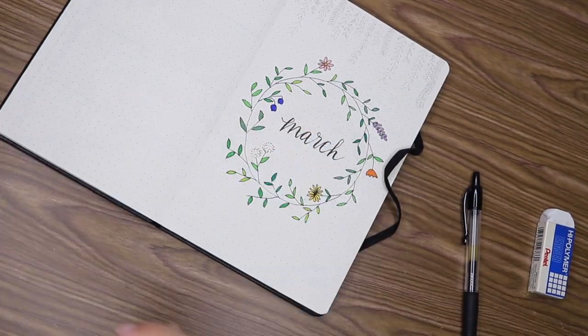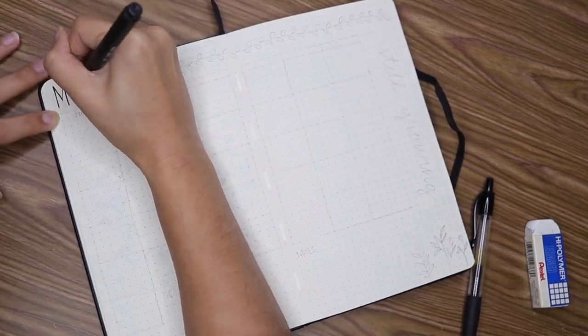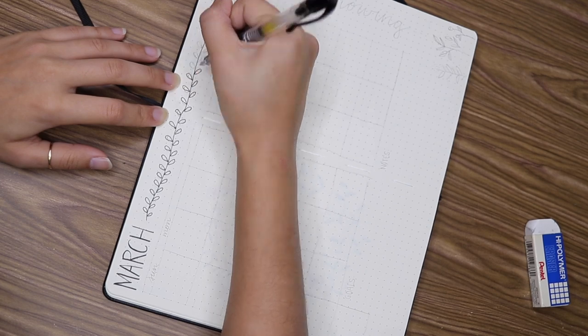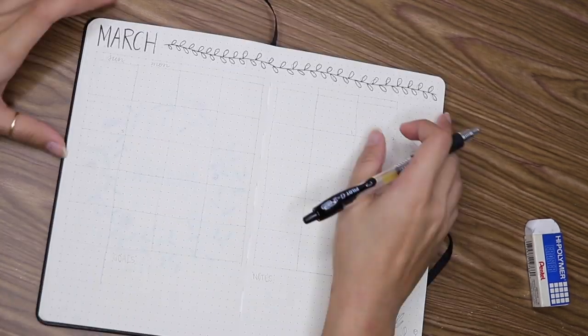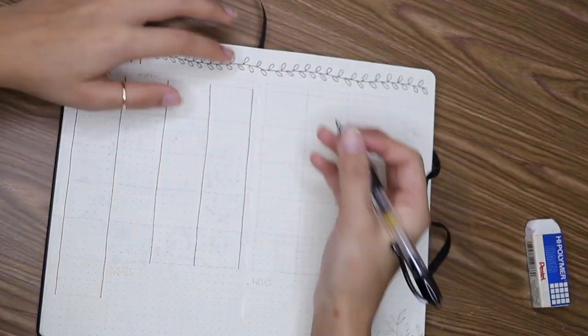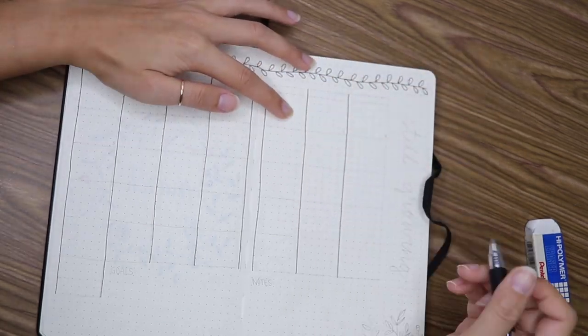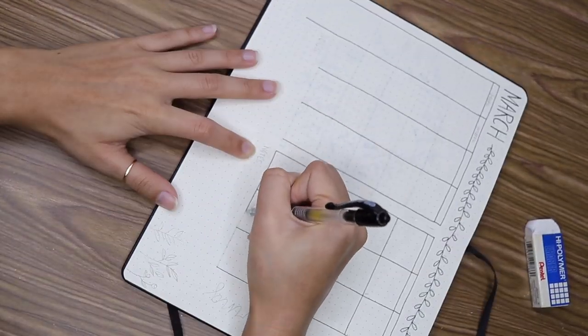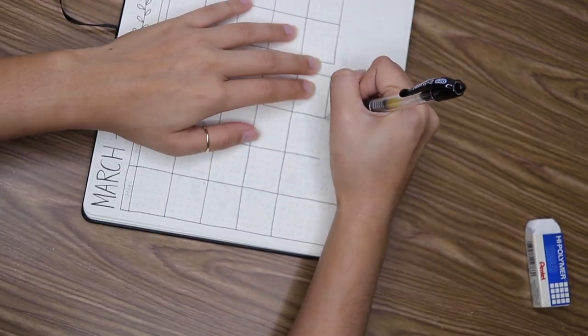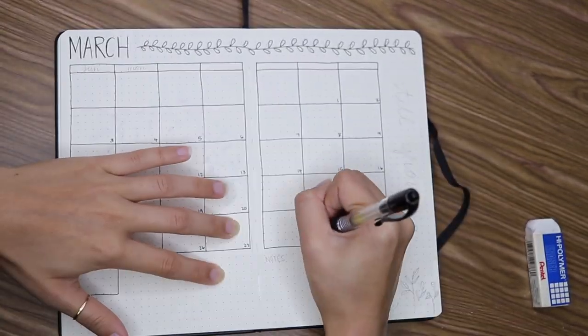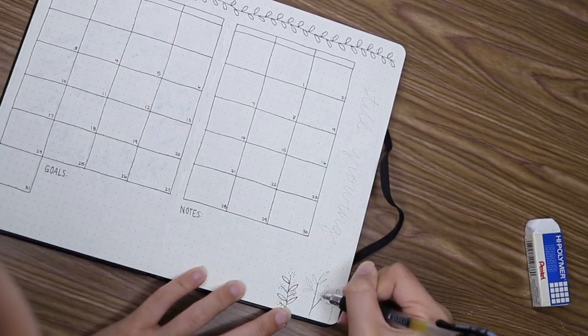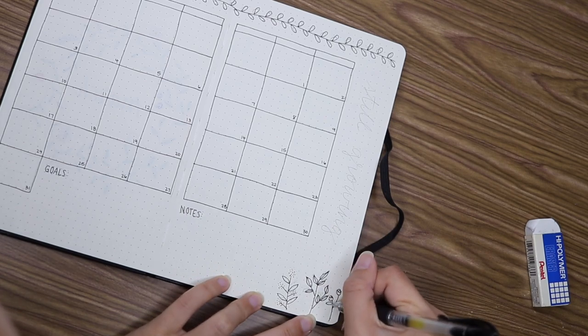So next up is our monthly spread. So I just have a vine going from March across the top of the page and I will color it in later. And I went with a very basic layout for the calendar, just six dots down and seven dots across. And I put the date in the bottom right corner because I don't like running into it when I write inside the box if it's in the top right or top left corner.